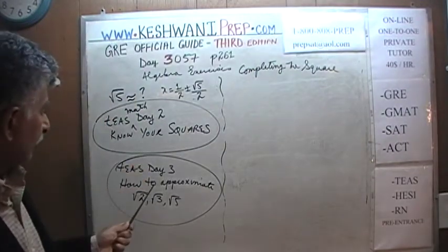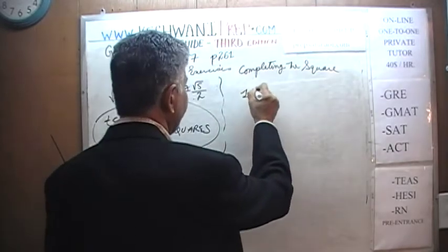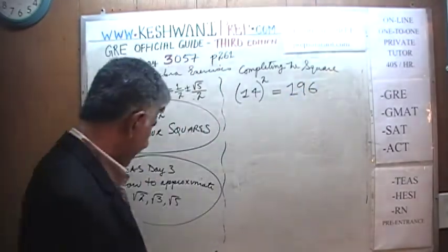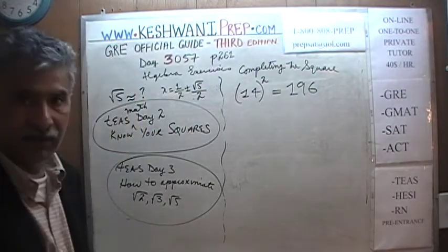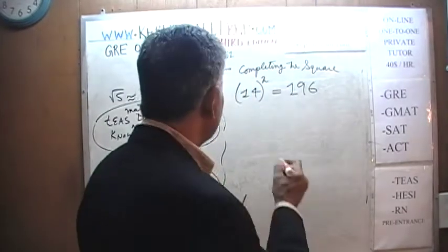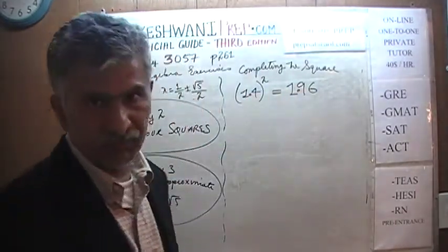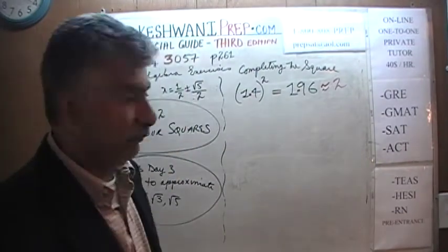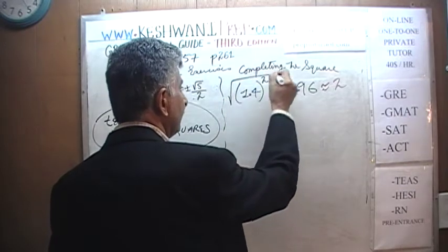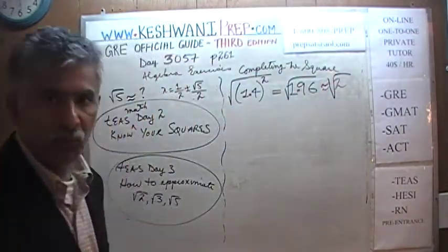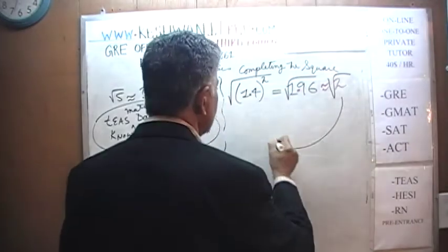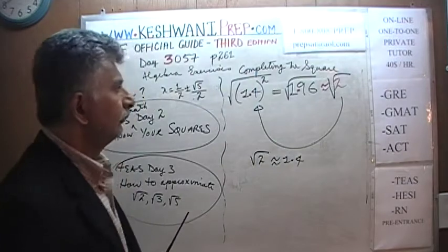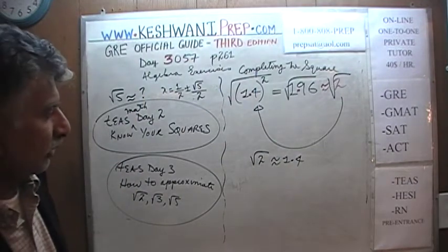Square root of 2 has to do with knowing that 14 squared is exactly 196. Therefore 1.4 squared is exactly 1.96, which is approximately 2. Therefore the square root of 2 is approximately 1.4.